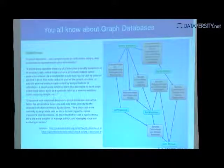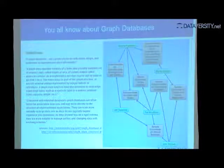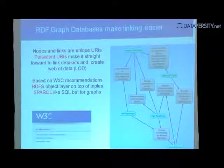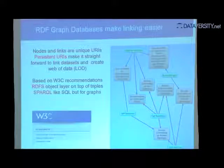You guys all know about graph databases — instead of rows and columns, you have nodes and links between nodes. The only difference between a graph database and an RDF graph database is that the nodes and links are unique URLs. That gives you an enormous advantage: you can have multiple databases all over the place, and as long as people use the same names, you can combine information and do queries that touch many different databases at the same time. This is all based on W3C standards.